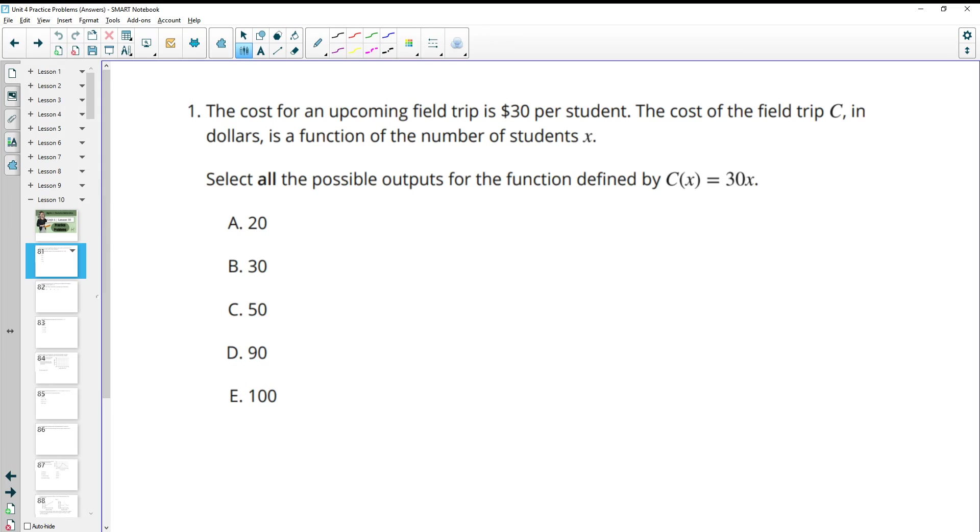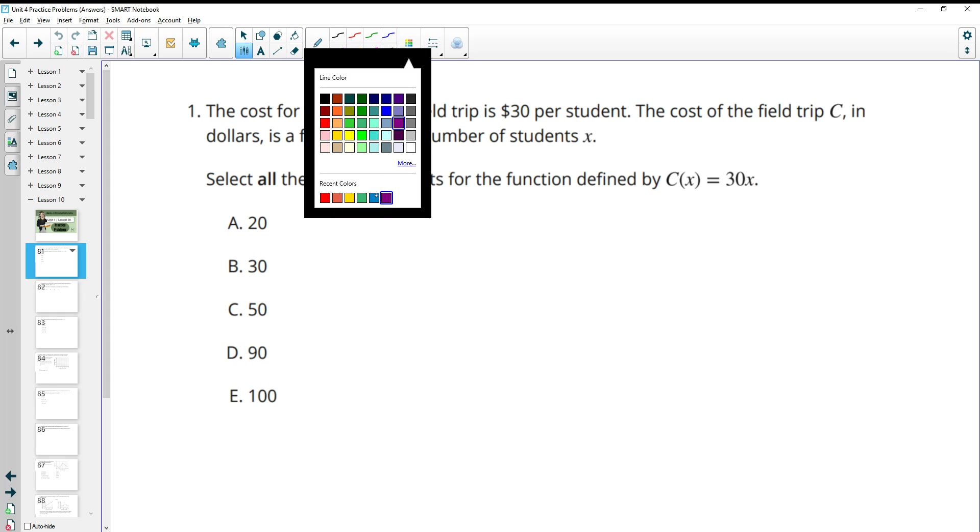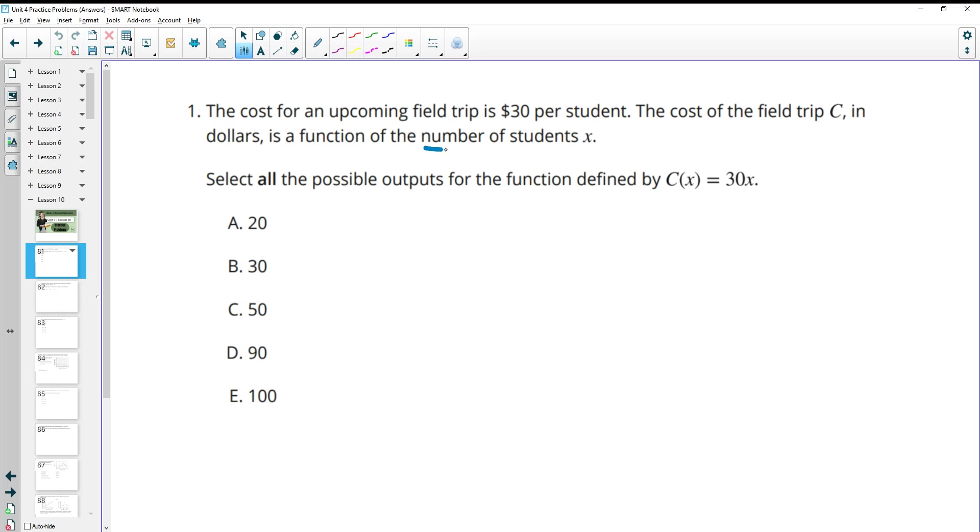Number one, the cost for an upcoming field trip is $30 per student. The cost of the field trip C in dollars is a function of the number of students. Select all possible outputs for the function defined by C(x) = 30x. So when we're looking at this, X is the number of students. X can only be positive whole numbers because you can't have half of a student attend a field trip.